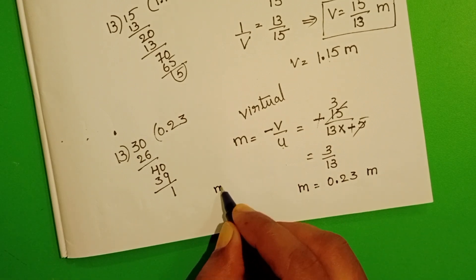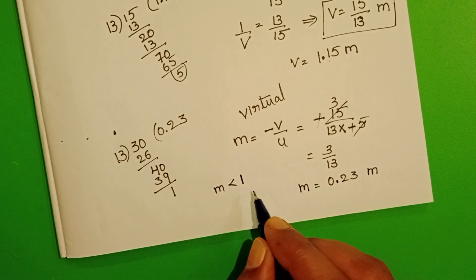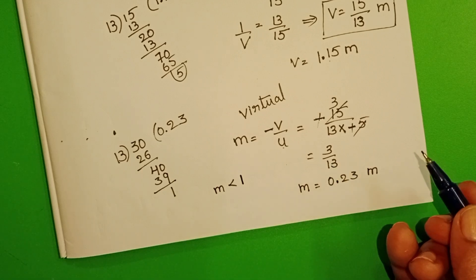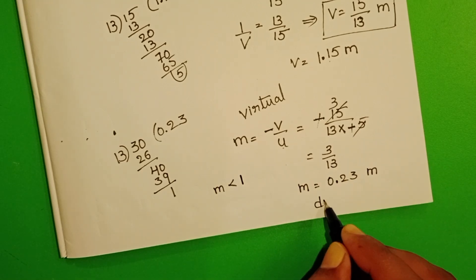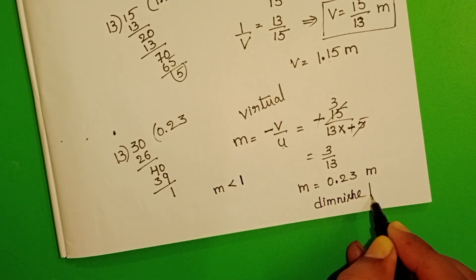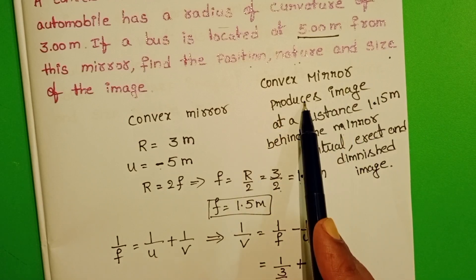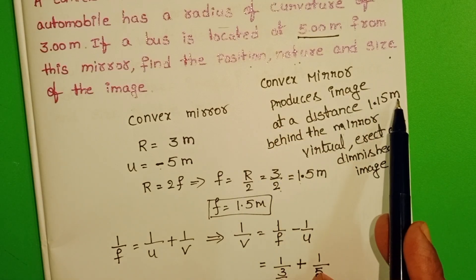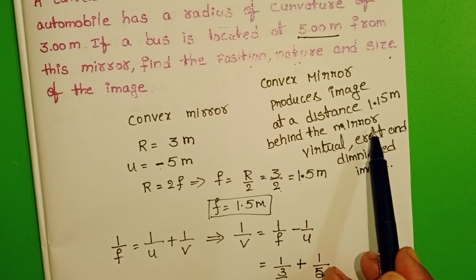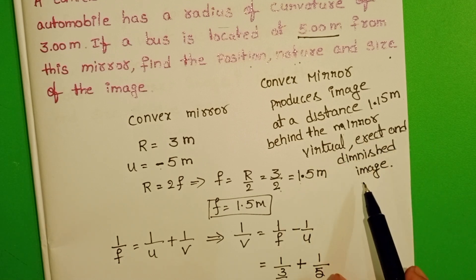Here, magnification value is less than 1, so the image is a diminished image. The convex mirror produces an image at a distance of 1.15 meters behind the mirror and this image is virtual, erect, and diminished.